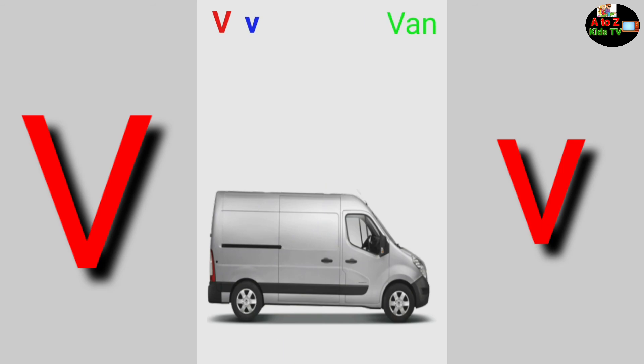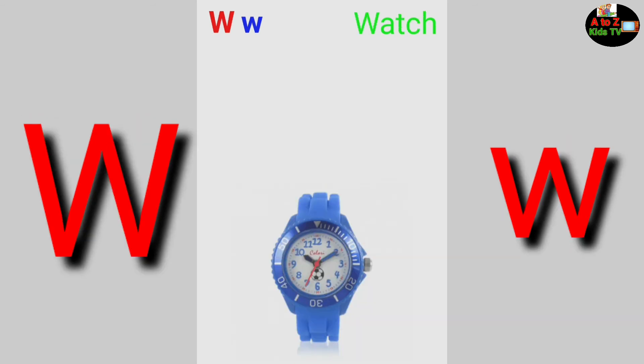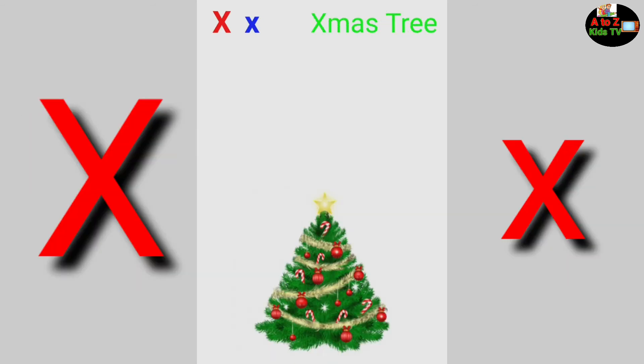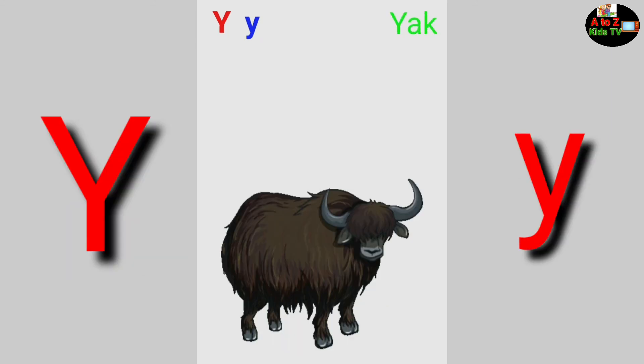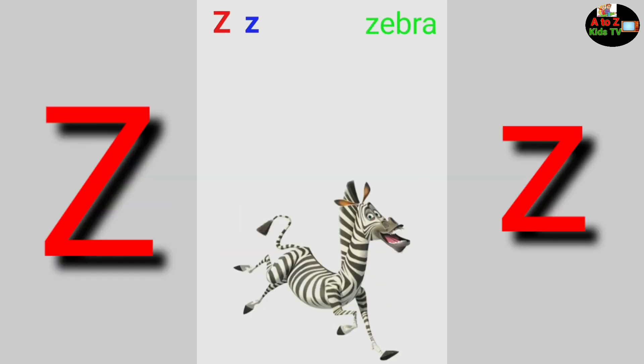V for Van, W for Watch, X for X Mastery, Y for Axe, Z for Zebra.